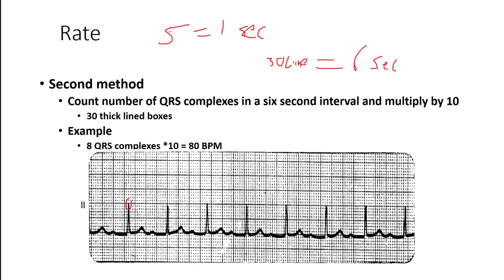In this example, we count 30 large boxes, then count the number of beats that occur in that six-second interval. We count eight QRS complexes. Eight complexes in a six-second interval — extending that out to 60 seconds or one minute — gives a heart rate of 80 beats per minute.